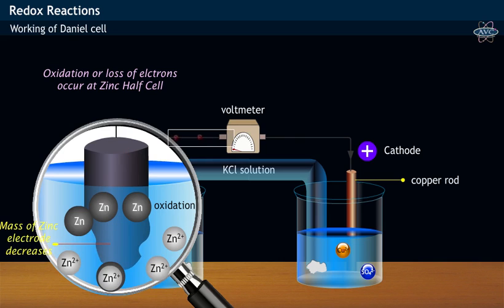The two electrons liberated from the zinc atoms travel through external circuit through platinum wire and finally reach copper electrode of copper half cell.